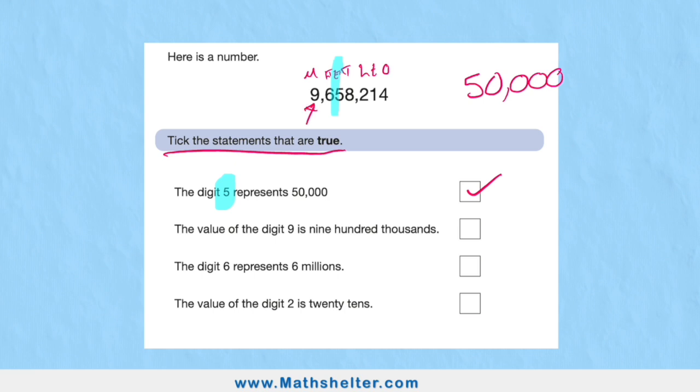The digit six represents six million. Well, no, the six is in the hundred thousands, so it would represent six hundred thousand. So it's not going to get ticked.